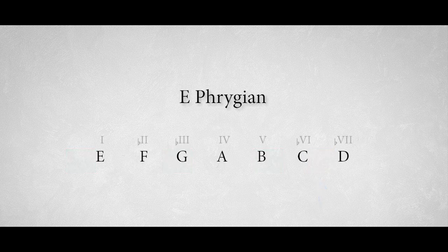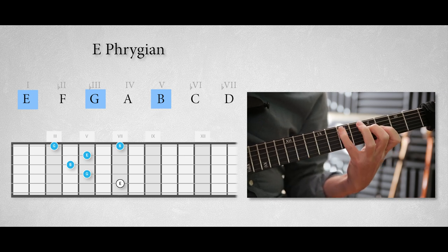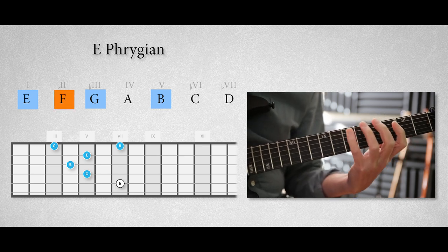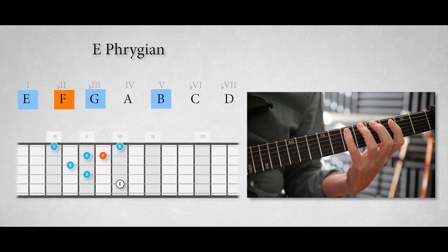Let's do another one by exploring the E Phrygian arpeggio based on the triad arpeggio. We know that the Phrygian mode is a minor scale with a flattened second degree. So we take an E minor triad arpeggio as a starting point. The flattened second degree in the E Phrygian mode is the note F. Let's add this note to our E minor arpeggio to create a Phrygian flavored E minor arpeggio.